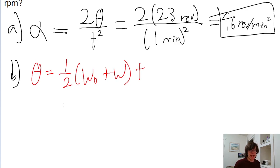In this case, we already have all those variables, and the only variable we're missing is the final angular speed. Let's do some algebra to solve for that. First, multiply both sides of the equation by two to get this two out of the denominator. Then divide both sides by t to get that t out of that side of the equation.